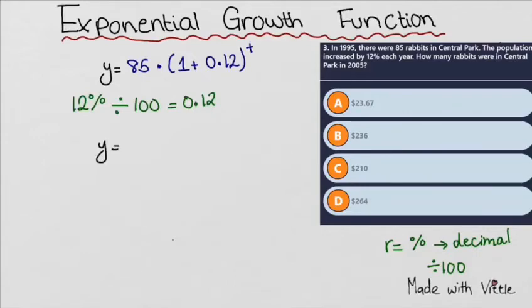We expand the bracket by adding 1 plus 0.12. This gives us 1.12 to the power of t.